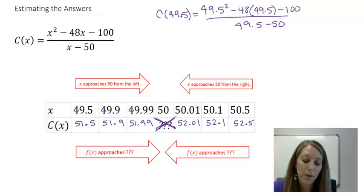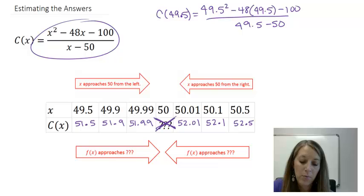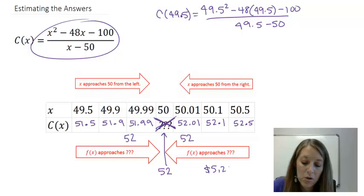So, I have filled in all of my boxes by plugging each of these x values into my equation up here. And we can see I have 51.5, 51.9, and 51.99. So, from the left, it looks like I'm getting closer and closer to the number 52. On the right, if I start on my outside, 52.5, 52.1, 52.01. So, also on the right, it looks like I'm getting closer and closer to the number 52. So, since these match on the same side, that means the answer that I'm going to fill in here is 52. Hence, it's going to cost us $5,200 to run this plant at 50% capacity.